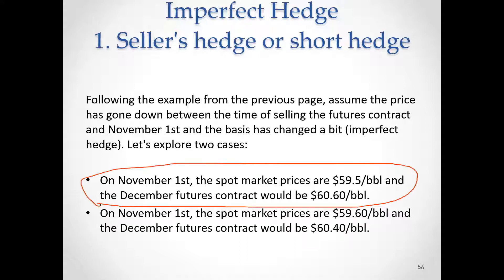Time passes and prices go down. In the first two scenarios prices go down. In example one, the spot market goes down 50 cents and the futures market goes down 40 cents, so futures drop to $60.60. In example two, which we'll get to after a couple of slides, prices still go down but the change in the futures market is larger than the spot market — the spot drops 40 cents and futures drop 60 cents.